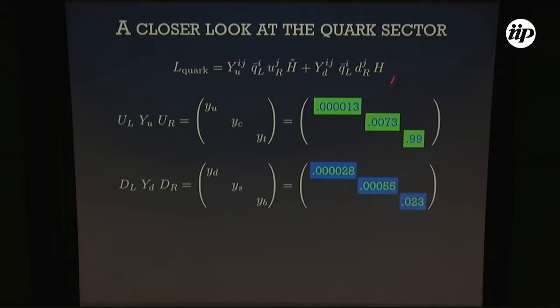Let's have a closer look at the quark sector. The quark sector is parametrized by two matrices: up and down Yukawa matrices. One can diagonalize them with four unitary rotations — UL, UR, DL, DR — producing eigenvalues that explain the masses on the first slide.